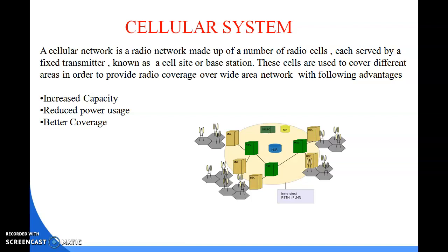Typically, systems using this approach are mobile telecommunication systems where a mobile station within a cell communicates with the base station and vice versa. In a particular cell there is a mobile station which makes the link with the base station for communication within the cell. The three main advantages of the cellular system are: increase capacity, reduce power use, and better coverage.